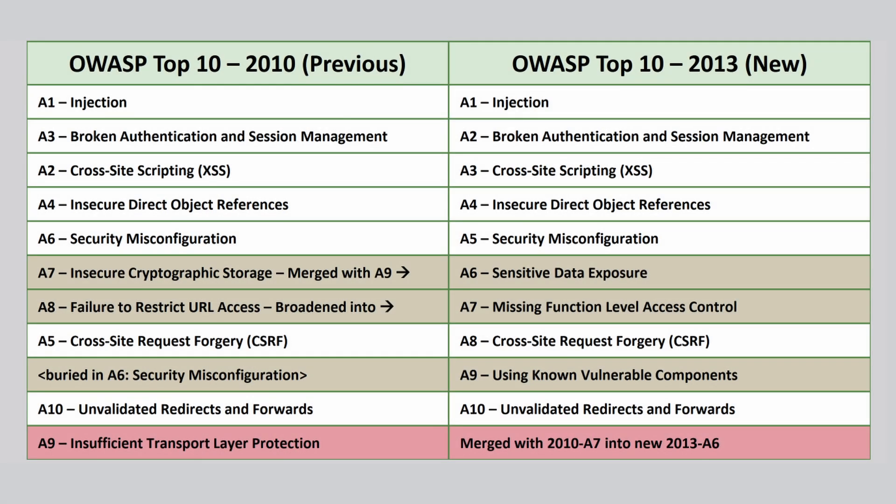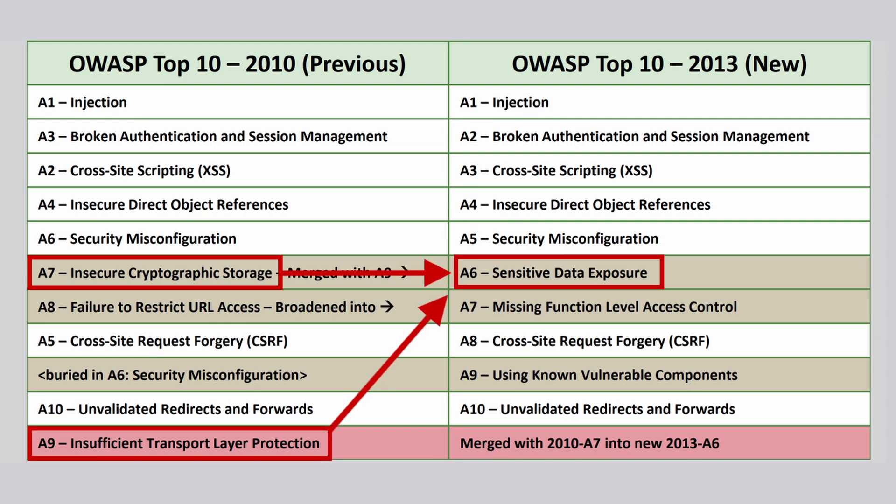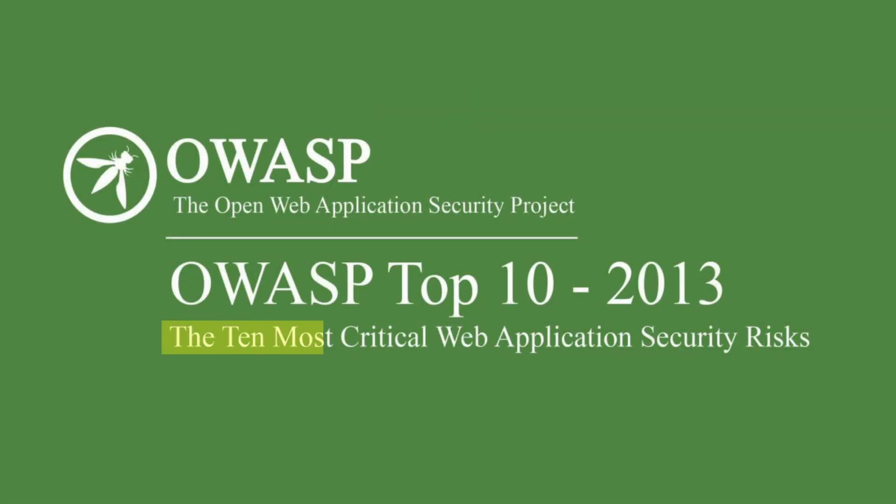What has happened since is the broader categories have gradually taken over the Top 10. In the 2013 version, insecure cryptographic storage was merged with insufficient transport layer protection to form the sensitive data exposure category. In 2017, IDOR and missing function level access control were merged into broken access control. At the same time, the project description was changed from the 10 most critical web application security vulnerabilities to risks. The focus had moved from individual vulnerabilities, which made sense given the increased use of categorization.